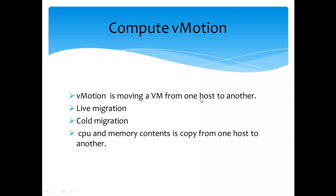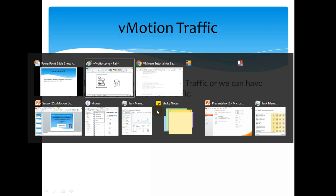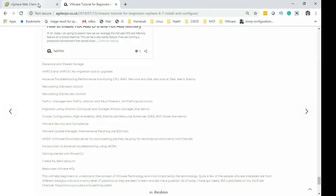The vMotion network can be enabled on management traffic, or you can have a dedicated vSwitch for the traffic. I would suggest an isolated vMotion network because vMotion traffic can be heavier. In a production environment you should have it on an isolated subnet and VLAN, with its own physical isolated NIC, so you are not overwhelming your management traffic. Management traffic is for your host to connect to vCenter to manage it, but VMware does give you the flexibility of using the management network if needed.